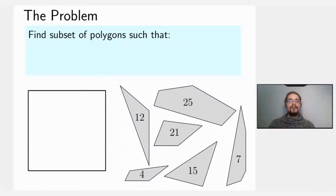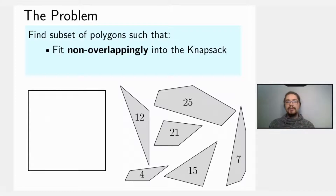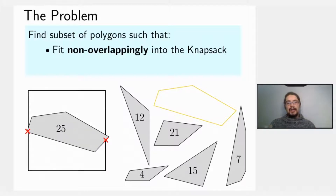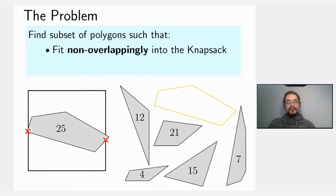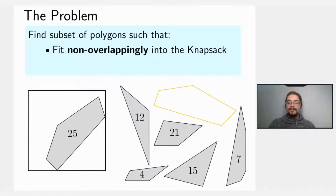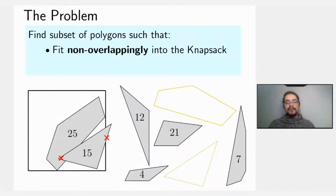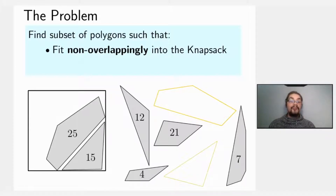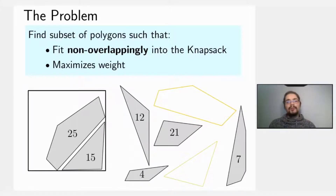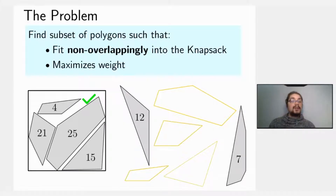Our objective is to find a subset of polygons such that they fit non-overlappingly into the knapsack. For example, we take a highlighted polygon, translate it into the knapsack, and see it is not placed completely inside. But after some appropriate rotation we can make it fit. Similarly, another polygon may not fit and may overlap another, but after appropriate rotation we can make it fit non-overlappingly. We want to maximize total weight, and by packing a few more polygons we can achieve weight optimality.